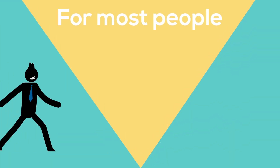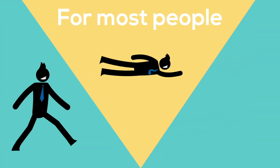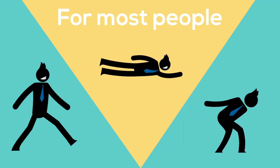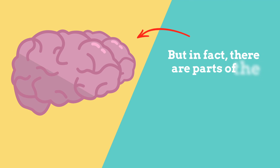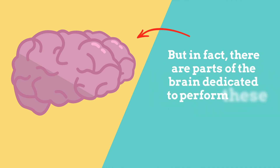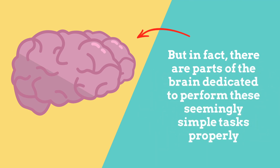For most people, walking, rolling over, and bending down are things that we don't think twice about. But in fact, there are parts of the brain dedicated to performing these seemingly simple tasks properly. With CP, these movements can be a lot more difficult.